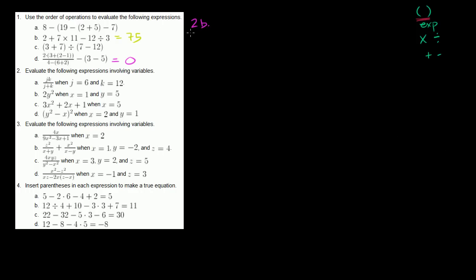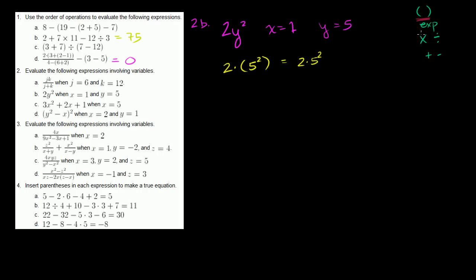Problem 2b: evaluate 2y² where y equals 5 (x equals 1 but is irrelevant since there's no x). Substituting, this becomes 2 times 5 squared. By order of operations, exponents take priority over multiplication, so we do 5 squared first — that's 25. Then 2 times 25 equals 50.